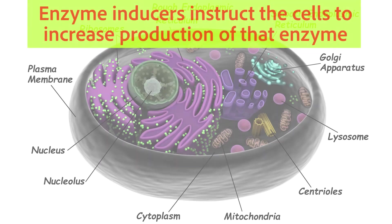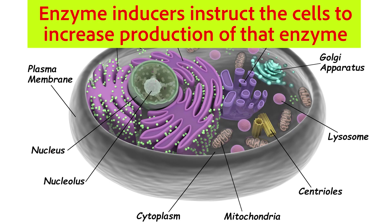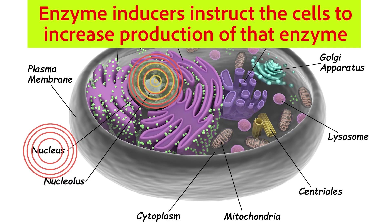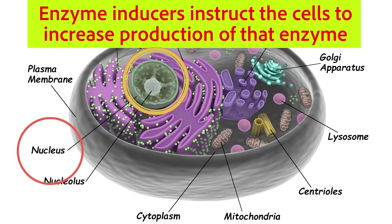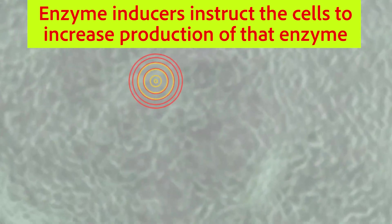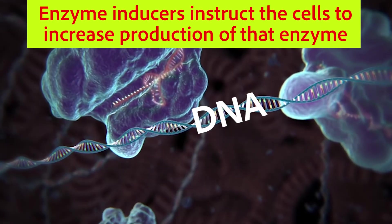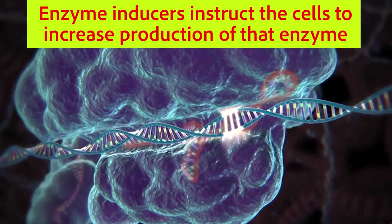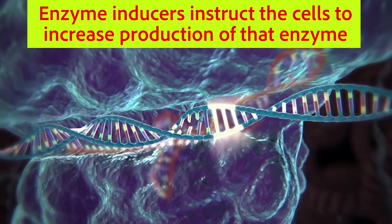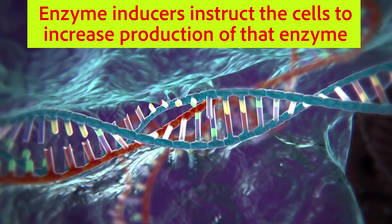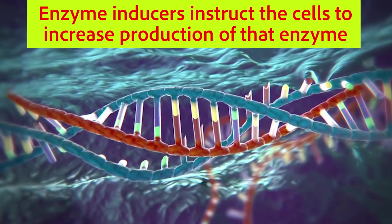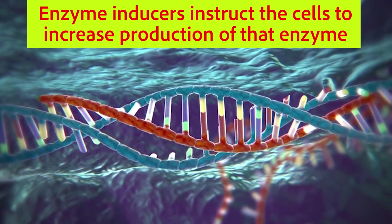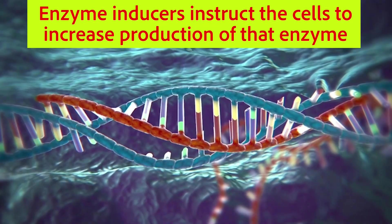The other thing to remember about drugs and enzymes is that some drugs are inducers of certain liver enzymes. When a drug is an inducer of a liver enzyme, it goes to the liver cells and instructs the cell to upregulate the production of that enzyme. We make our proteins with the DNA in the nucleus of the cell, so a drug acting as an enzyme inducer is essentially instructing the cell to increase production of that enzyme. Your drug manuals will have all of the various reactions that are possible — it's not something you need to memorize.